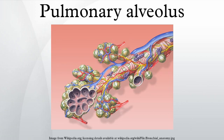An alveolus is an anatomical structure that has the form of a hollow cavity. Found in the lung parenchyma, the pulmonary alveoli are the terminal ends of the respiratory tree, which outcrop from either alveolar sacs or alveolar ducts, which are both sites of gas exchange with the blood as well. Alveoli are particular to mammalian lungs. Different structures are involved in gas exchange in other vertebrates. The alveolar membrane is the gas exchange surface.